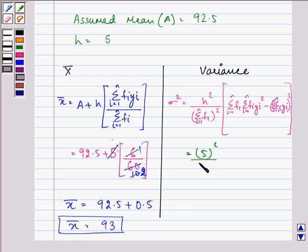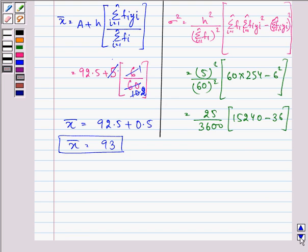we have 5 the whole square upon 60 the whole square into 60 into 254 minus 6 the whole square. That is 25 upon 3600 into 15240 minus 36. That is further equal to 25 upon 3600 into 15204.